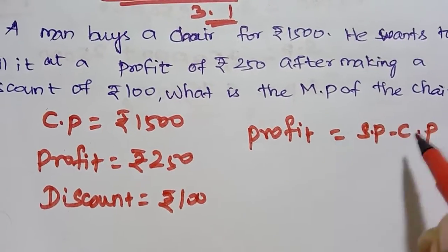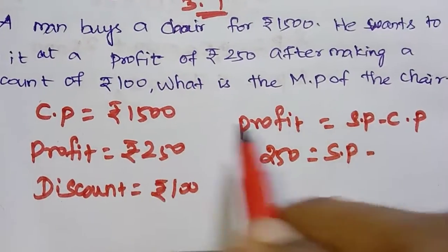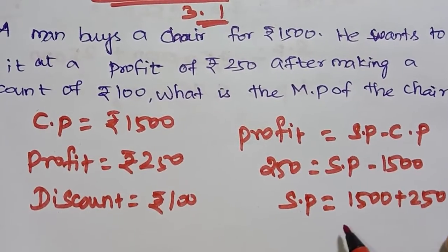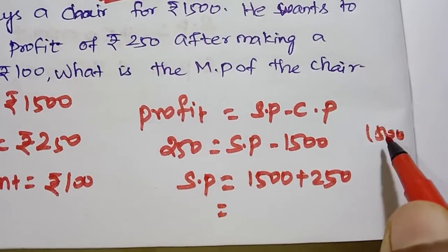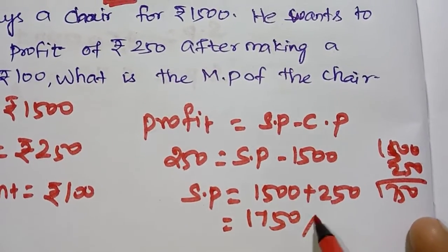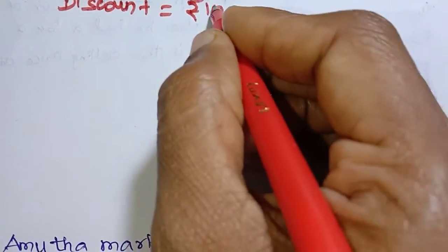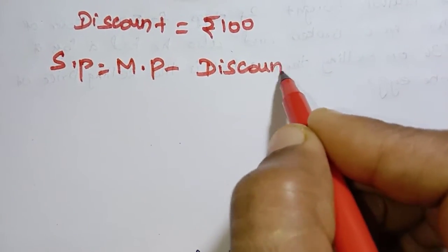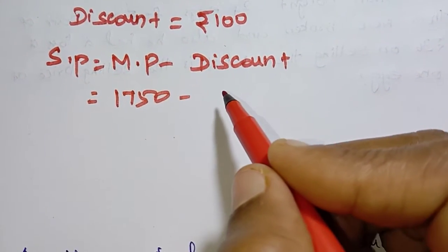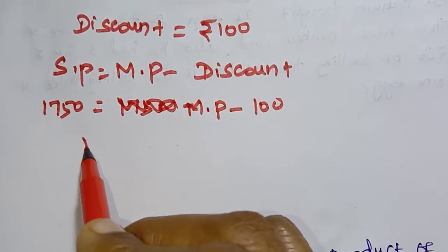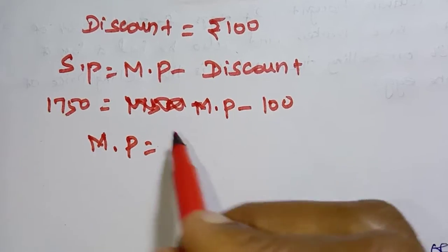Profit = SP minus CP. So SP = CP + profit = Rs. 1500 + Rs. 250 = Rs. 1750. Now, MP = SP + discount, so MP = 1750 minus 100 plus 100.